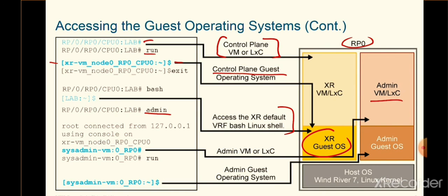The admin keyword still works, and from within admin mode, if you type run it drops us again into the guest OS — almost identical to what we did from the XR control plane. We can access the guest OS from either the XR control plane VM or the admin VM simply by typing run. If you ever need to access the host OS, it is possible but not recommended — it's typically related to software upgrades outside the scope of normal everyday updates. With that, thank you very much for watching this topic.